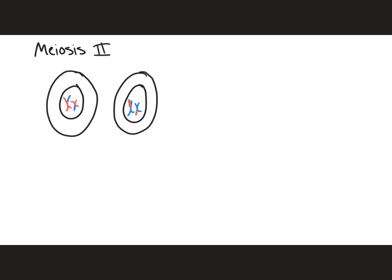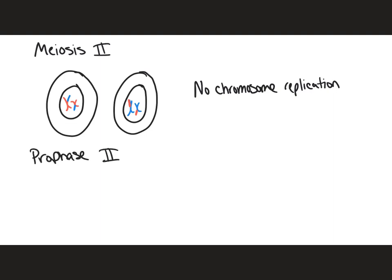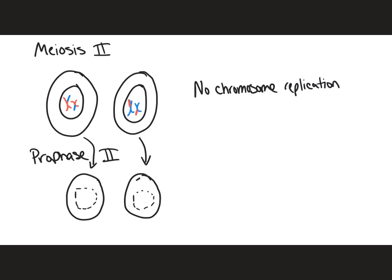We now go into meiosis two with these two non-identical haploid cells. At this point no chromosome replication is going to occur — we go straight from meiosis one right into meiosis two. Starting with prophase two, occurring in both cells at the same time, we're going to see the breakdown of the nuclear envelope and the formation of the spindle fibers from the centrioles.